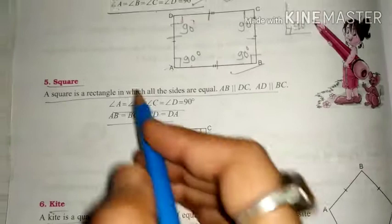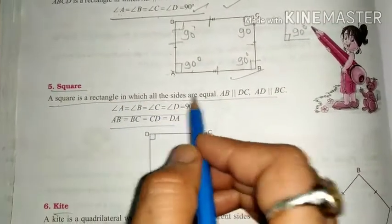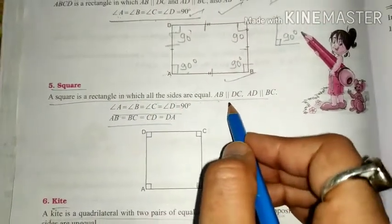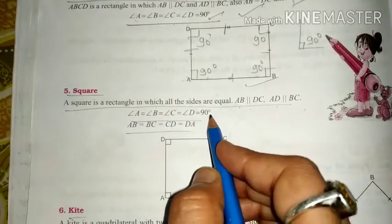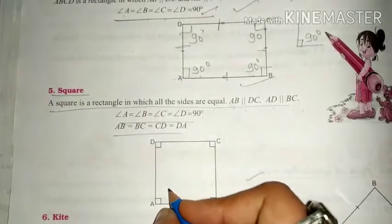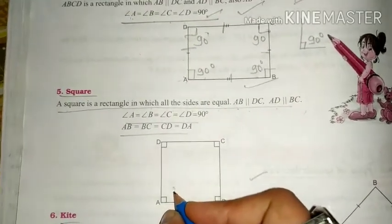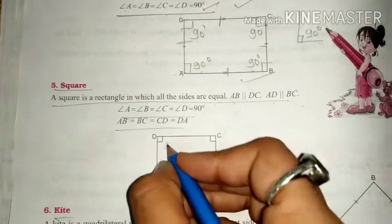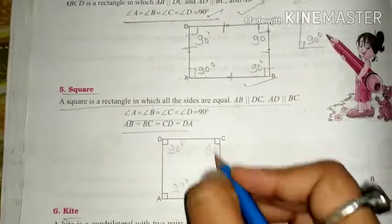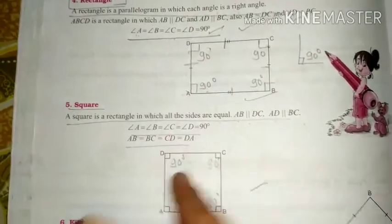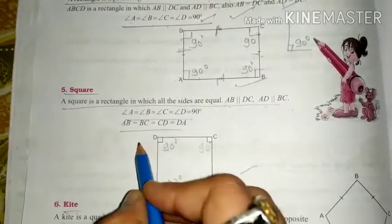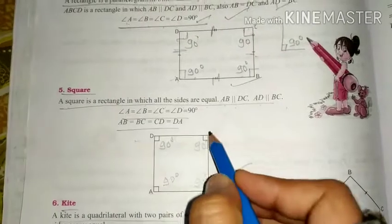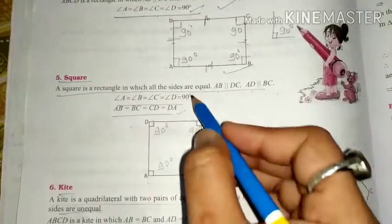A square is a rectangle in which all sides are equal. AB is parallel to DC and AD is parallel to BC, and each angle of a square is also 90 degrees. The difference between a rectangle and a square: in a square, all four sides are equal — AB equals BC equals CD equals DA — whereas in a rectangle, only opposite sides are equal.